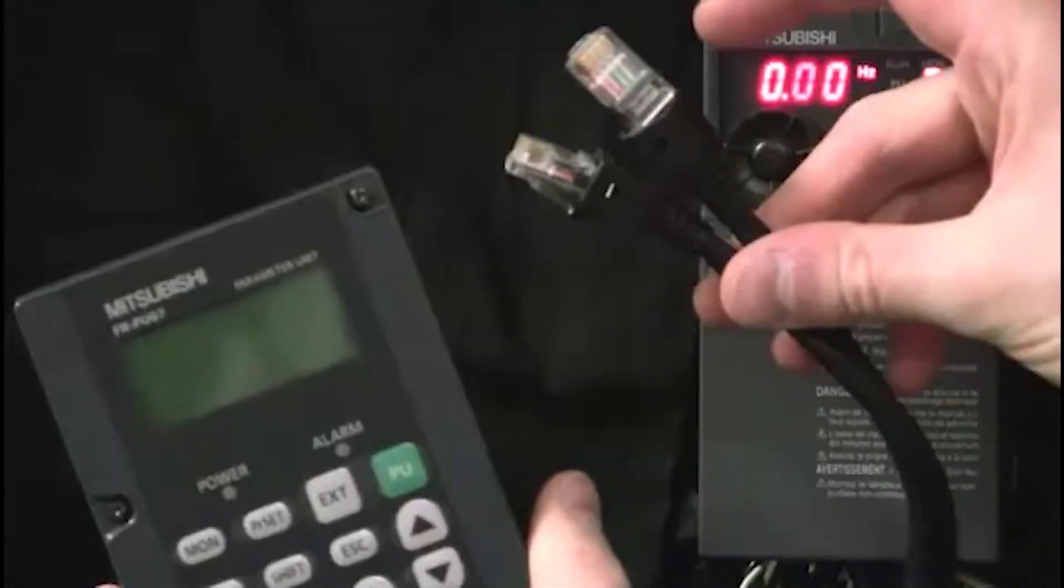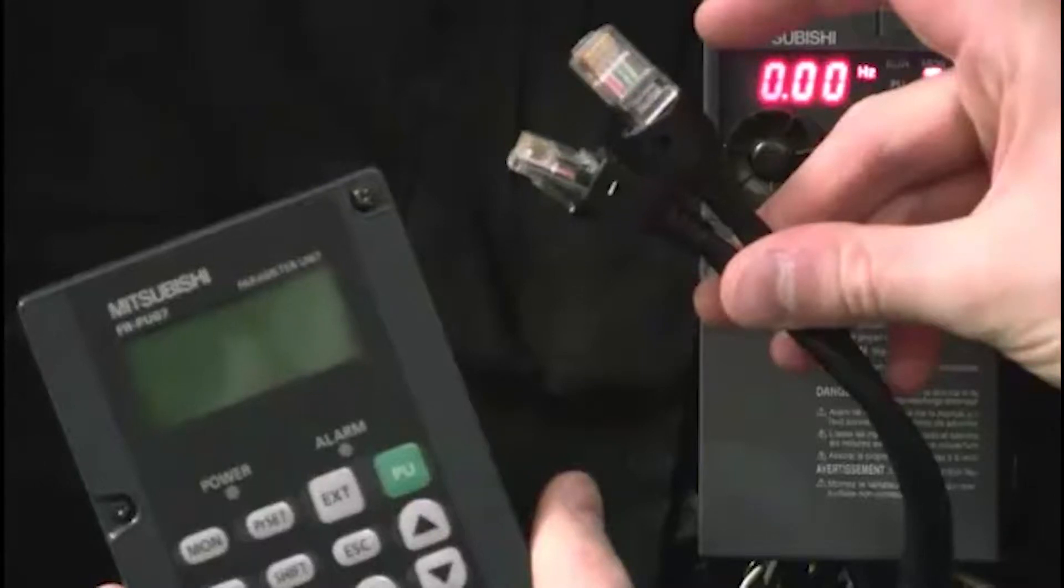Hello and welcome to a Mitsubishi Electric Quick Tips video. Today we're going to talk about how to connect an FR-PU07 parameter unit to an E700 VFD.